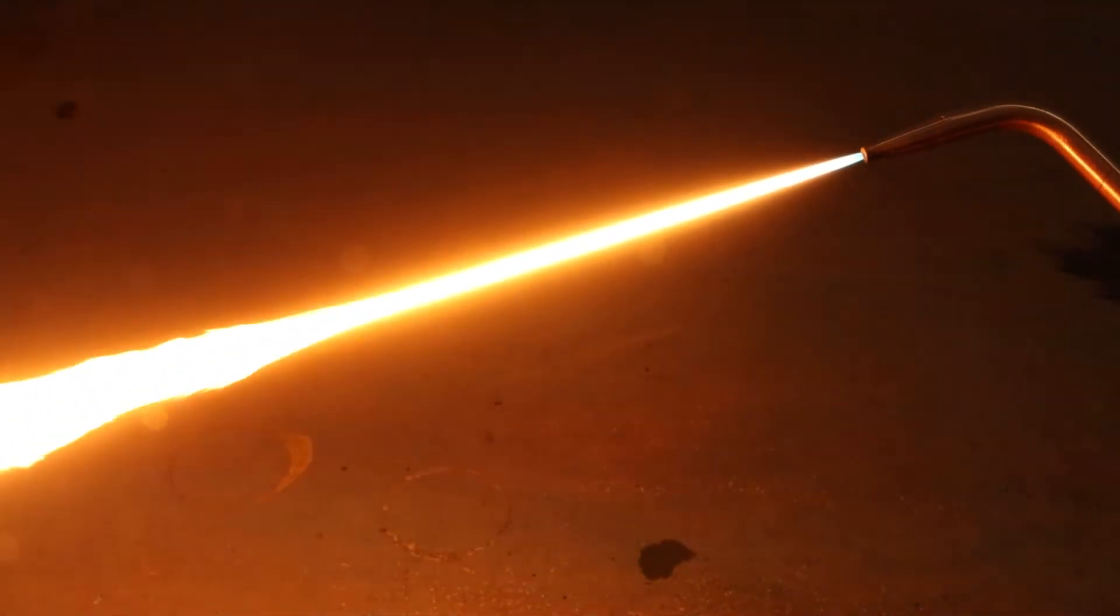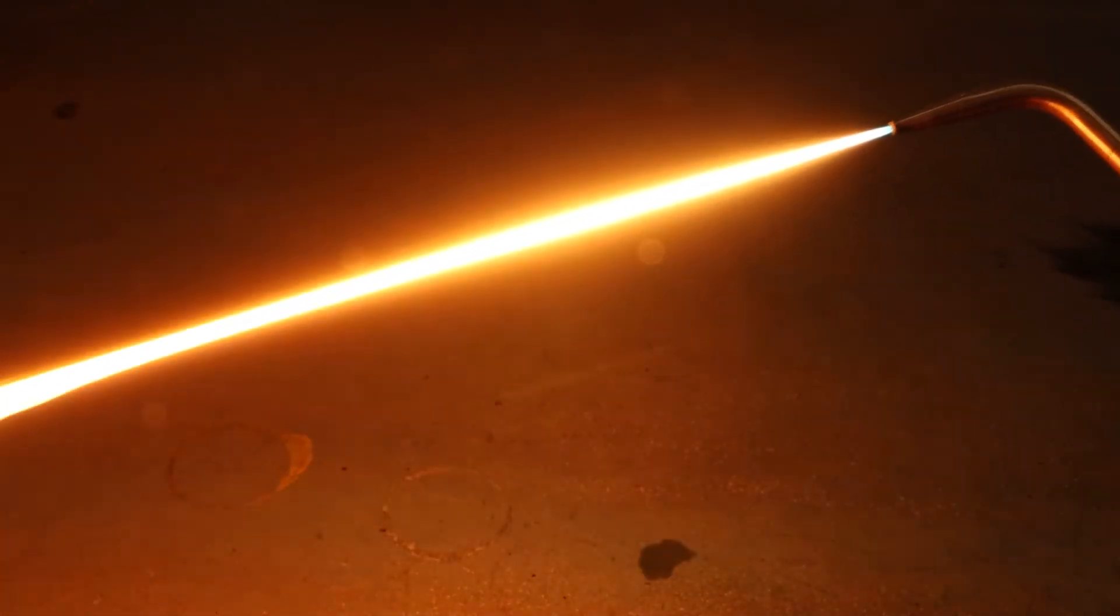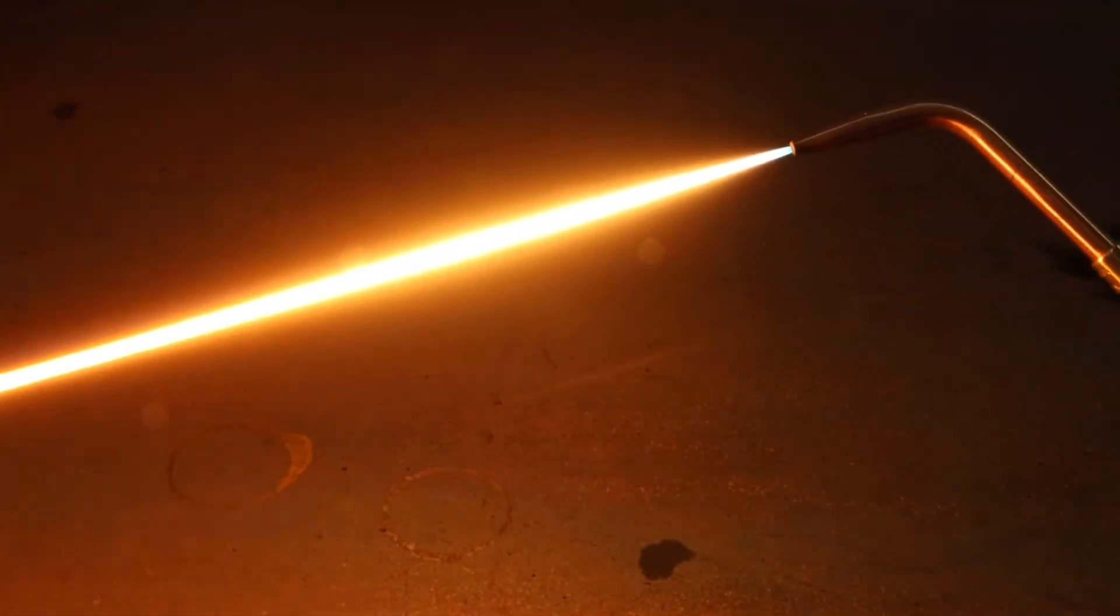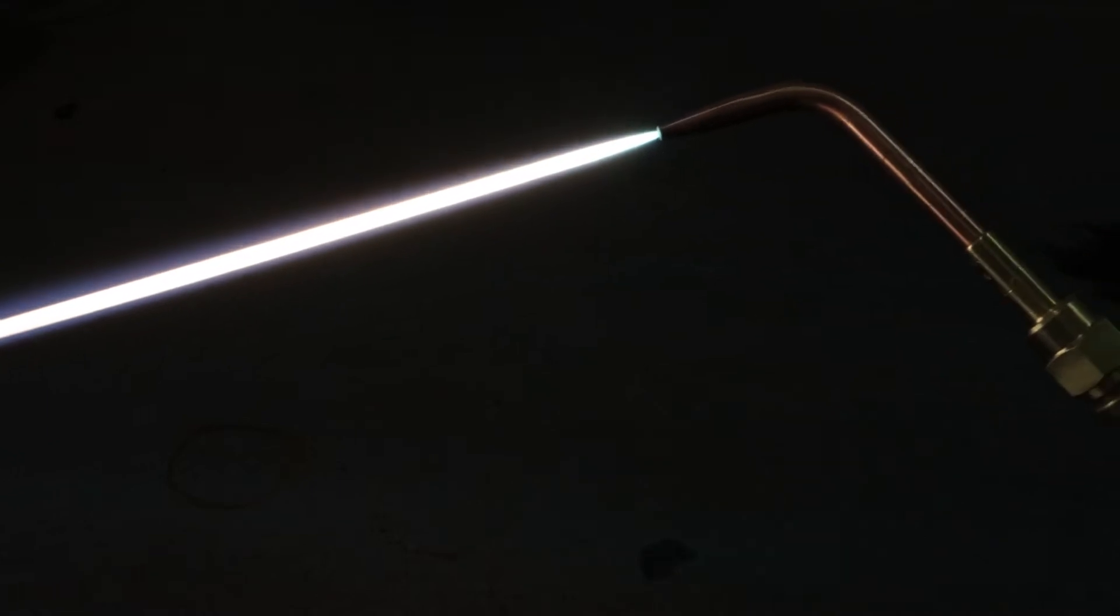As you slowly crank up the oxygen, you'll get an incredibly long and bright flame known as a carburizing flame or a feather. With this flame, there's more acetylene present than oxygen. So this flame is used when you really don't want oxygen getting into your weld pool or your brace. It is also much less useful for lighting cigarettes.